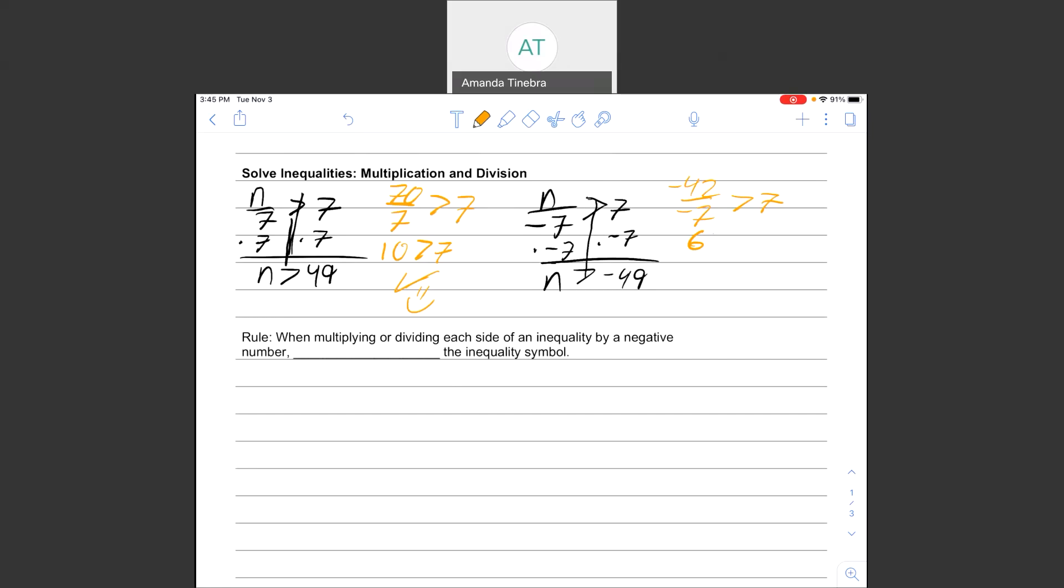Already, I see that we have a problem. 6 is greater than 7. And this actually leads to our rule.